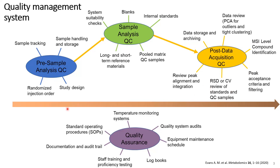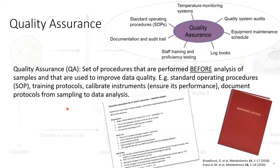Then you have the quality assurance system, which happens before any analysis — standard operation procedures. It could include monitoring of temperatures in the room, power data, and logs of the instruments. Instruments follow a maintenance schedule, including how often we calibrate the mass spec — all of that should be within the quality assurance systems, documentation, and audit trails. If there are any changes to the standard operation procedures, or if any samples undergo a different procedure from the others, you document it accordingly.